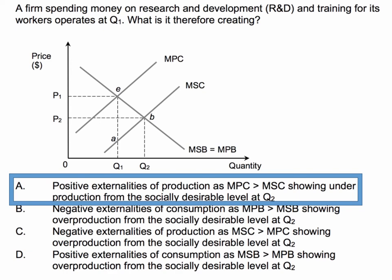The firm operates at Q1, and that represents a market failure because it represents underproduction from society's point of view. The business needs to be encouraged to expand output to the socially optimal output OQ2, where the social benefit equals the social cost at point B. That allows the country to capture the potential social welfare gain equal to area triangle EAB.